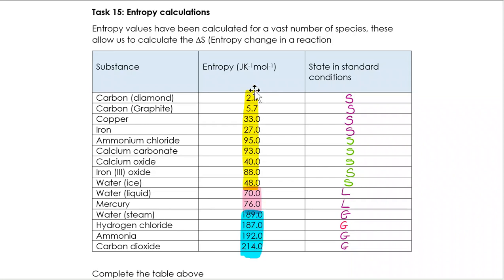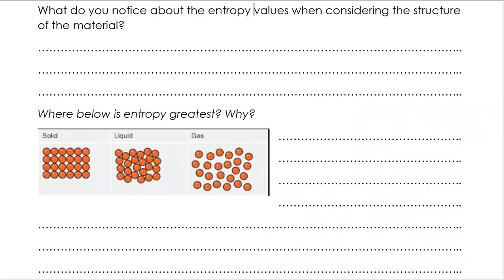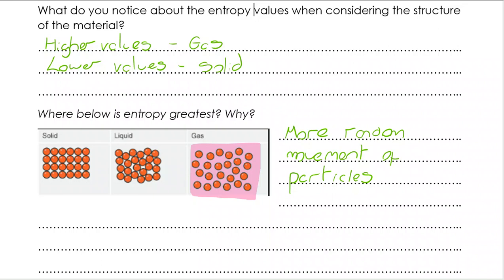So there's color coding there. We can see that all of the solids have got the lowest entropy values, the liquids have higher entropy values, but then the gases have much higher entropy values. So what do you notice about the entropy values when considering the structure of the material? Higher entropy value means it's a gas, lower value will mean it's a solid, somewhere in between makes it a liquid. And which of the three has the greatest entropy? That would be the gas. And that's because there is more random movement of particles, faster movement of particles, and the particles are further apart.